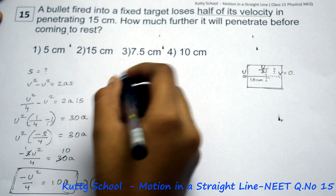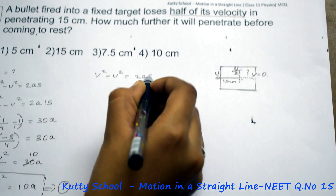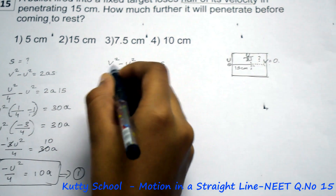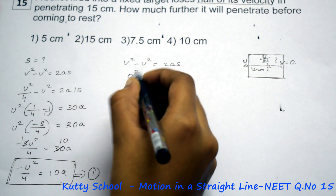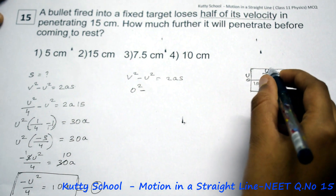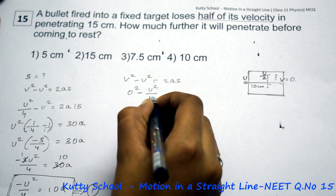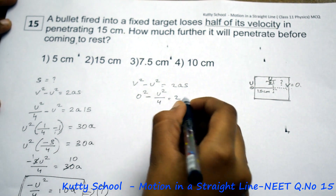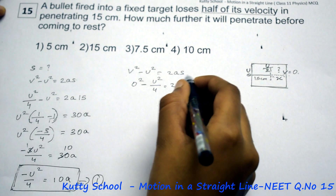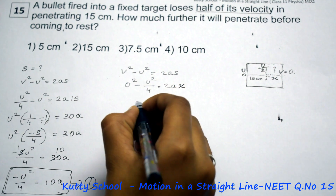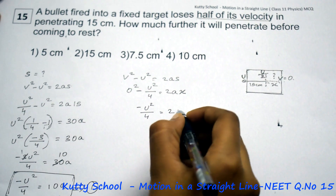Now, for the remaining distance, applying v squared minus u squared is equal to 2as again. The final velocity becomes 0, and the initial velocity for this part is u by 2. So, 0 squared minus u squared by 4 is equal to 2a times x, where x is the remaining distance. Therefore, minus u squared by 4 is equal to 2ax.